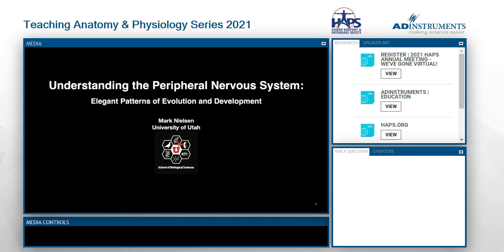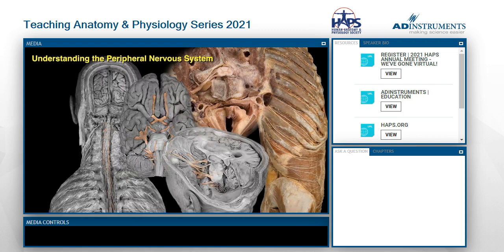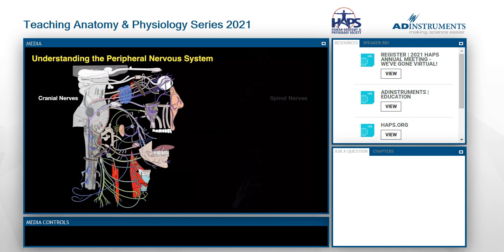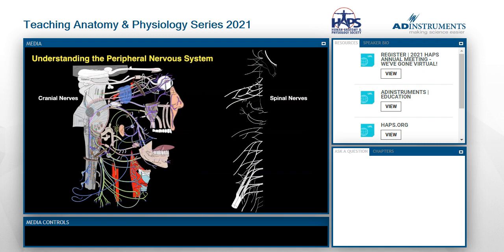I am very excited to be here today and have this opportunity to talk to you about understanding the peripheral nervous system, and I want to try to share with you some elegant patterns of evolution and development to gain a better understanding, both for ourselves and also, hopefully, to better teach our students this interesting network of wires. The peripheral nervous system, at its most complex, is an amazing network of wires that we call cranial nerves and spinal nerves that come off the brain stem and the spinal cord and branch out to every peripheral tissue, innervating muscles and glands, bringing in sensory input from all parts of our body.